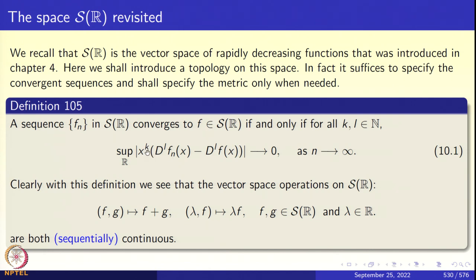In particular, if I take K equal to 0 and L equal to 0, we see that F_n must converge uniformly to F. By taking K equal to 0 and L equal to 1, the derivatives of F_n must converge uniformly to F', and so on. All the derivatives of F_n must converge to the respective derivatives of F uniformly on the whole real line, and this must persist even when I multiply by x to the power K. So this is a very strong notion of convergence.